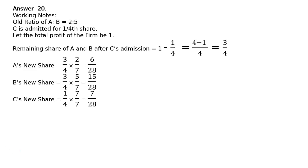And C's new share is one-fourth. To make the denominator 28, we multiply 7 upon 7, that is 7 upon 28. Therefore, the new ratio of A is to B is to C is equal to 6 is to 15 is to 7.